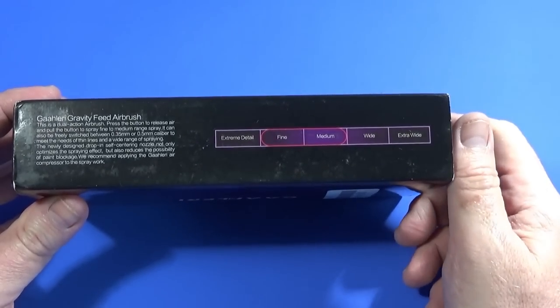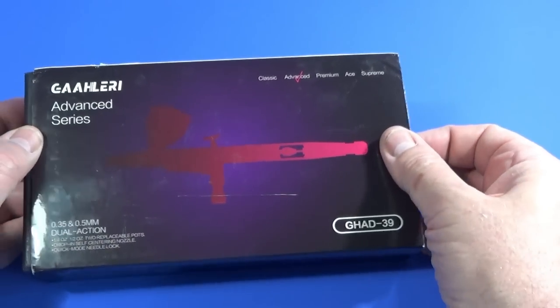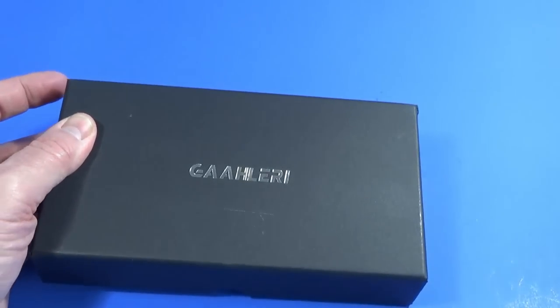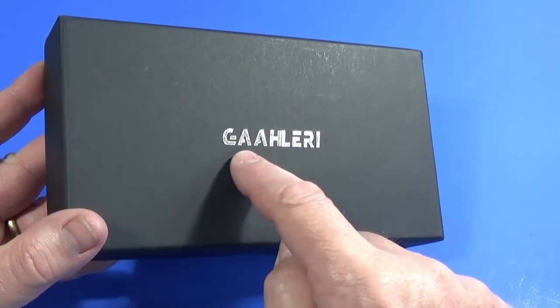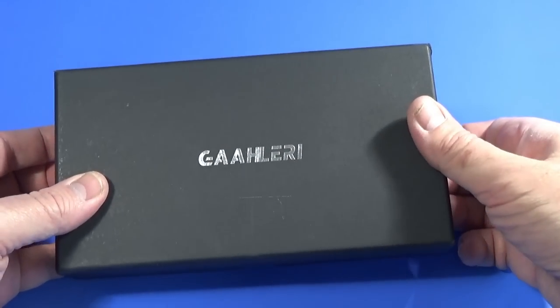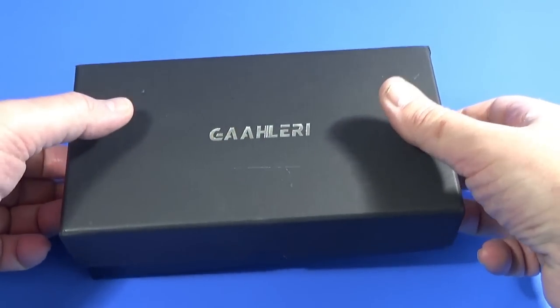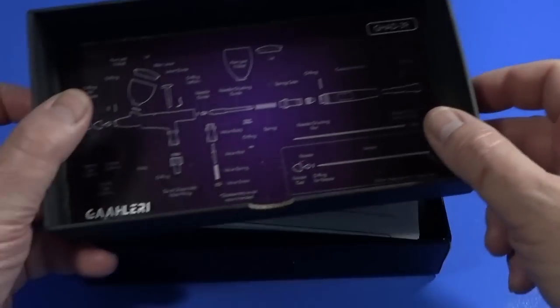It says on the side here that this is for fine and medium airbrushing, which is pretty much most of the time what we're going to need. Very nice looking shiny box. However, inside is another shiny box this time cardboard with a stamped in metallised brand name. Very smart indeed. You know, bearing in mind how much we're paying for this, it's very smart.